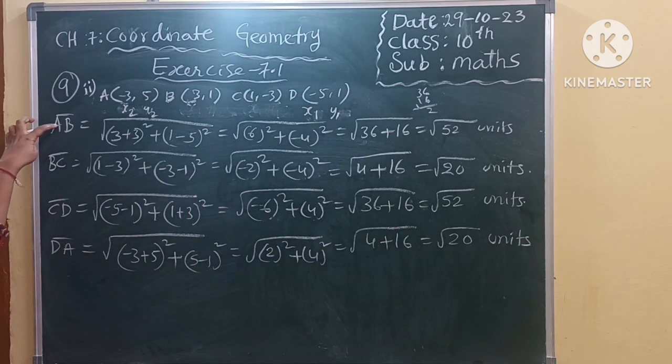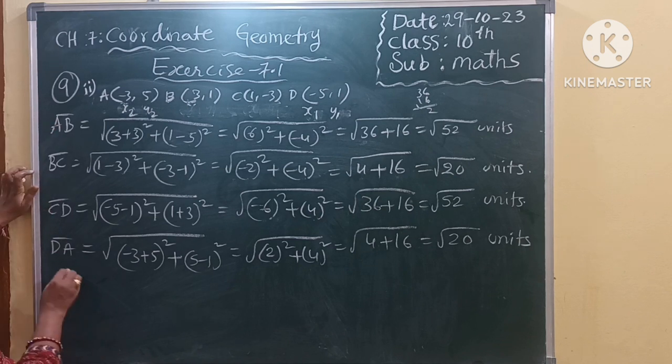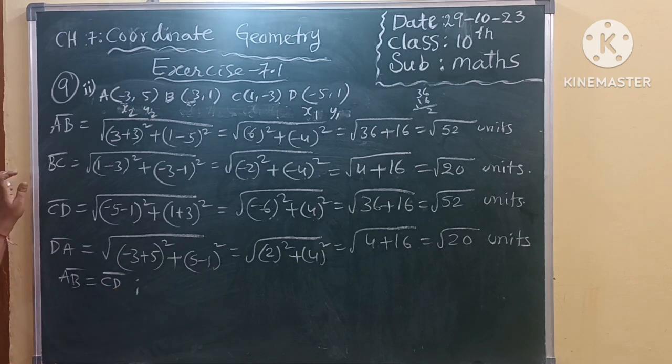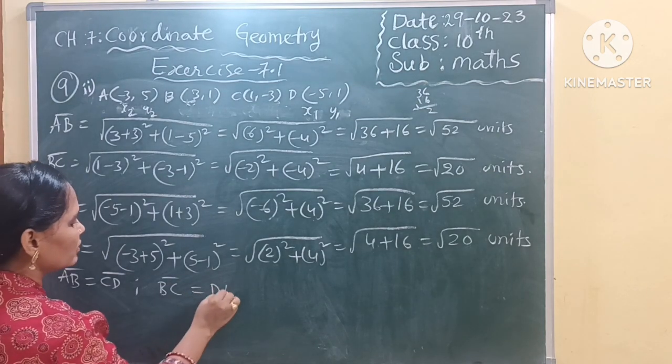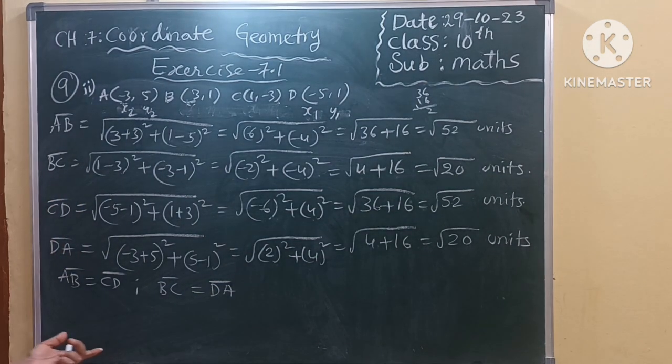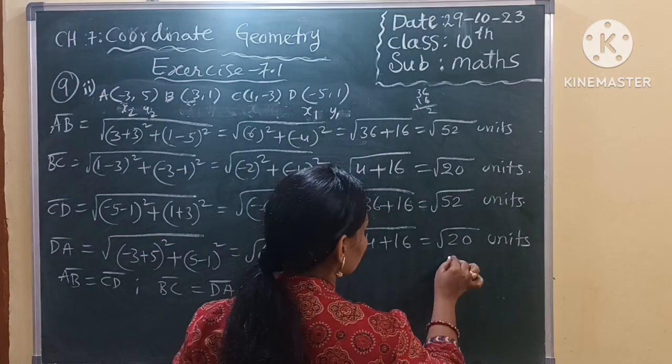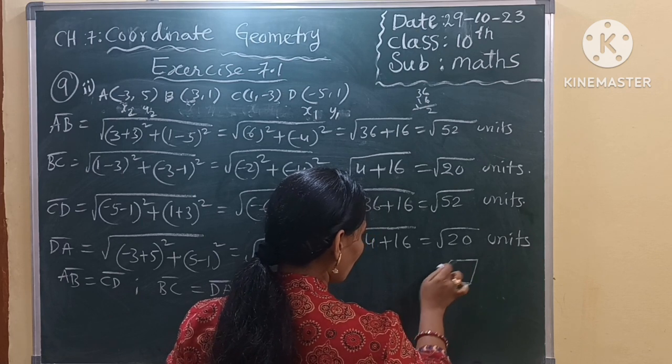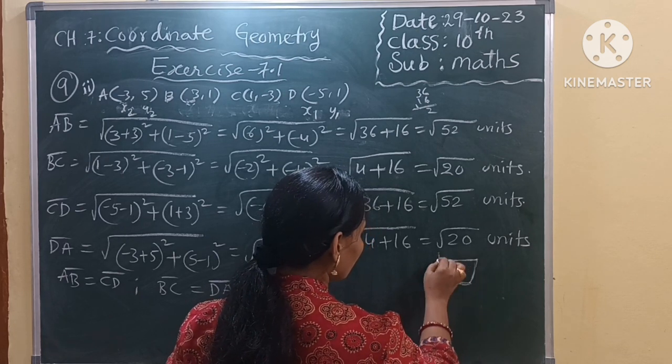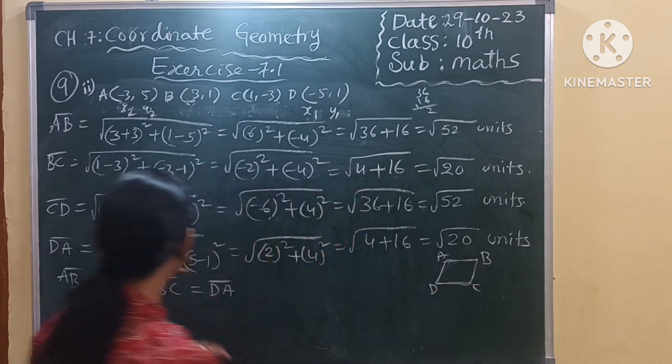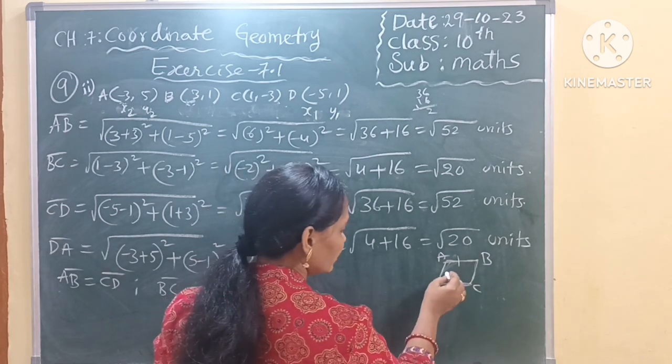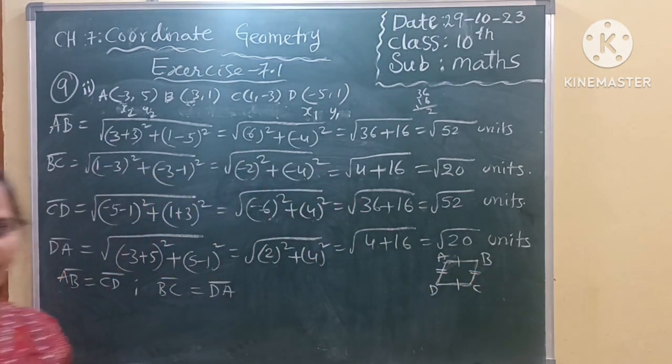Now see here, AB is equal to CD and BC is equal to DA. These two are equal, these two are equal.